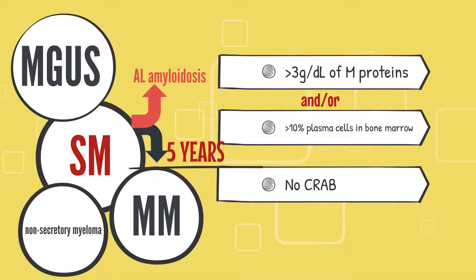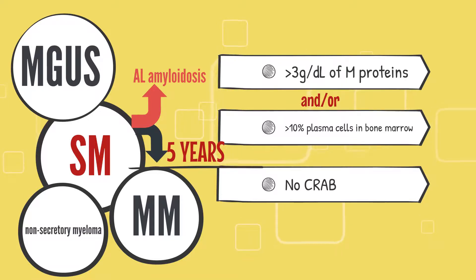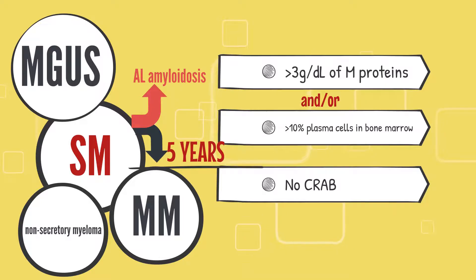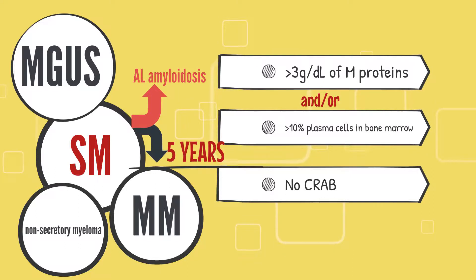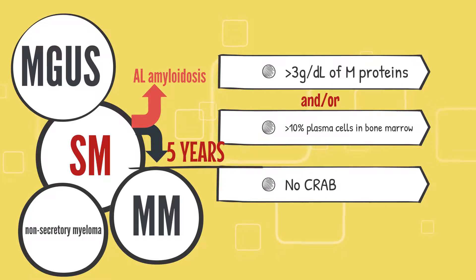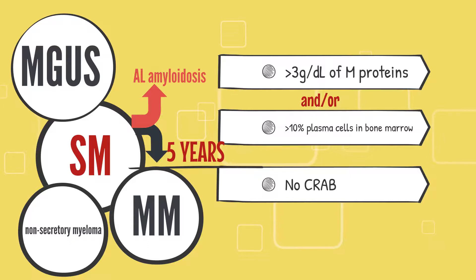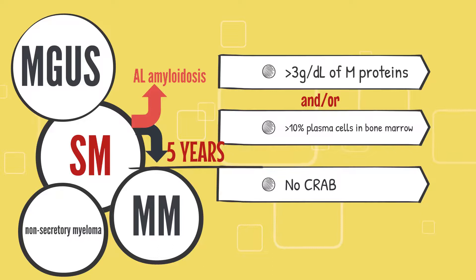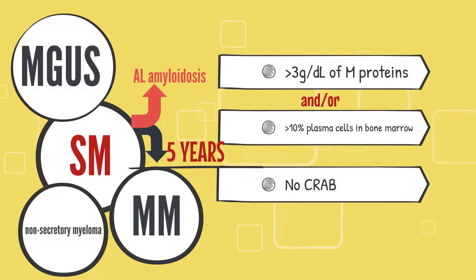Now let's take a look at smoldering myeloma. Smoldering myeloma is characterized by the production of more than 3 grams per deciliter of M-proteins — a larger amount than in MGUS — more than 10% of plasma cells in the bone marrow, and no features of end-organ damage: no hypercalcemia, no renal impairment, no anemia, and no bony lesions. Smoldering myeloma can progress into AL amyloidosis or multiple myeloma over a period of 5 years.